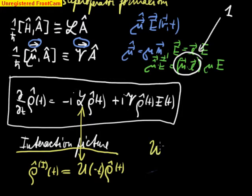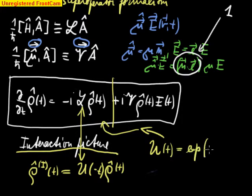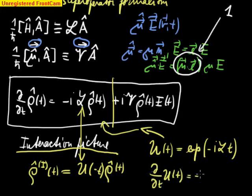U is a solution of this equation. U T formally looks like an exponential of minus I L T. And that means when we take a derivative of U T, we will get this minus I L in front of it.